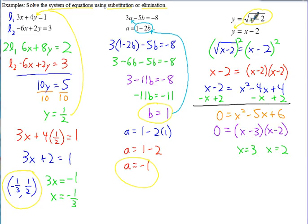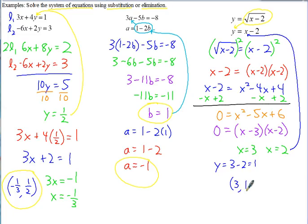To solve for y, plug each x value into y equals x minus 2. When x equals 3, y equals 1, giving solution point (3, 1). When x equals 2, y equals 0, giving solution point (2, 0). So we've got two different points of intersection where these two graphs cross. That includes the notes for AP Calculus on the topics of manipulating equations and solving systems of equations.